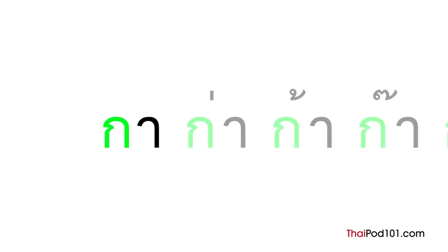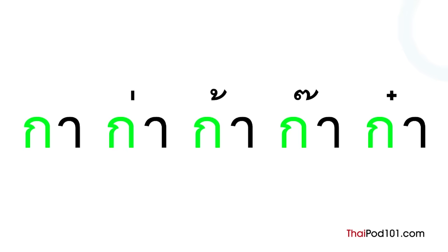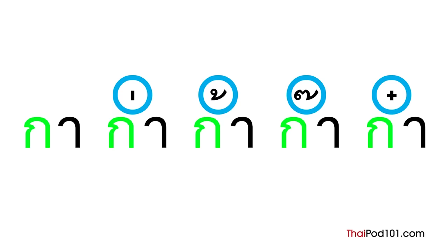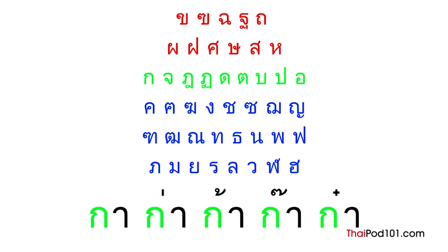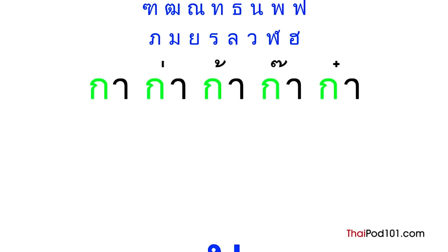If you make the wrong tone, you won't be easily understood. Thai script has four different tone symbols which help to indicate different tones in writing. But they don't automatically tell you which tone a syllable is — the consonant class, length of the vowel, and type of ending sound also factor in. If that sounds like a lot to keep track of, don't worry. We'll tackle each tone rule one by one so you won't feel overwhelmed. Are you ready to learn your first Thai consonant? Let's begin.